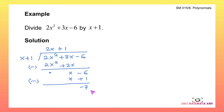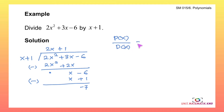There are no more x terms, so we cannot proceed and we stop the long division. Remember to write the final answer in general form: p(x) over d(x) equals q(x) plus r(x) over d(x).